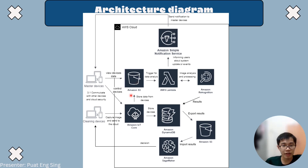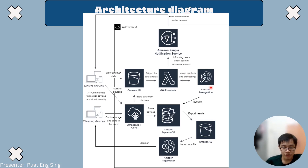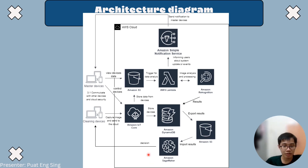Inside our cloud system we have IoT Core, S3 bucket, Lambda, Amazon SNS, Amazon Rekognition, DynamoDB, another S3 bucket, and SageMaker. IoT Core sends device data to the S3 bucket and DynamoDB. Lambda takes data from the S3 bucket to trigger analysis, which is sent to Rekognition for computer vision processing. The results are sent to DynamoDB, which exports them to another S3 bucket. SageMaker then imports that S3 bucket to perform machine learning and decision making, and outputs the decision to the cleaning devices.